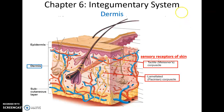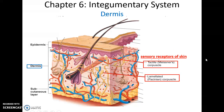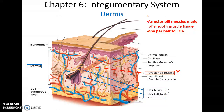You can also find tactile corpuscles — touch receptors — near the interface with the epidermis. Deeper in the dermis, you can find laminated corpuscles, which are important for the sensation of pressure, sensing how much something is pushing on the skin.